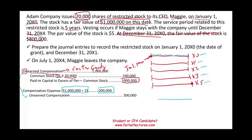It's very beneficial for restricted stocks to keep track of your unearned compensation, because you'll see what happens. We credit unearned compensation. We started with a million debit, and now we've credited it $200,000. This is at the end of year X0. At the end of year X1, we'll do the same thing — debit compensation expense, credit unearned compensation, $200,000.